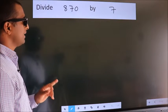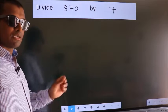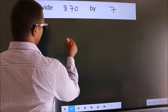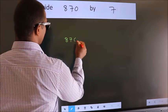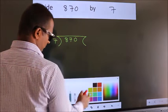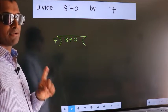Divide 870 by 7. To do this division, we should frame it in this way: 870 here, 7 here. This is step 1.